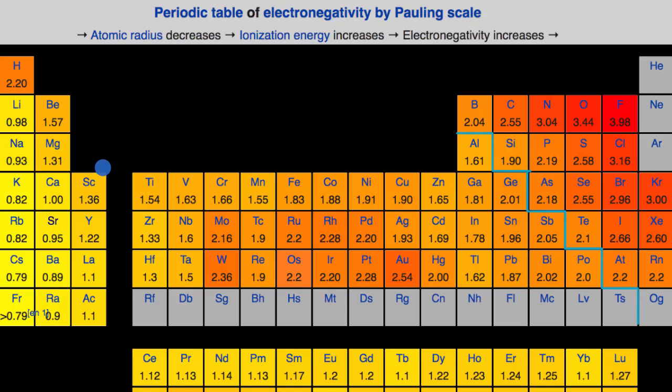In other videos, we had started talking about the types of bonds that might form between atoms of a given element. For example, if you have two metals forming a bond, you are going to have a metallic bond.